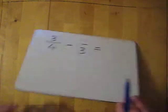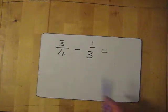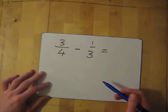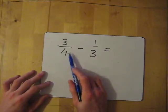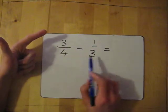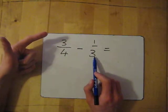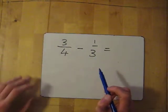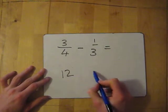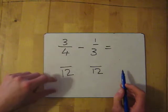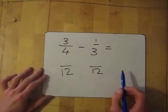Let's try another one: three quarters take away one third. Our common denominator is what's in the four times tables that's also in the three times tables — the smallest one. Four doesn't work for three, eight doesn't work for three, but twelve is in the four times tables and in the three times tables. So twelve is our common denominator.